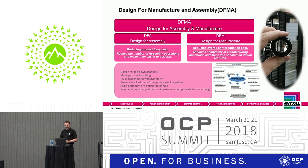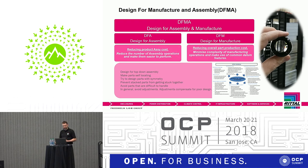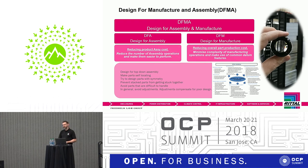Breaking down DFMA: DFA — design for assembly — is basically reducing product assembly cost by reducing the number of assembly operations and making them easier to perform. DFM — design for manufacture — is reducing the overall part production cost by minimizing the complexity of manufacturing operations and making use of common features and common datums between parts. We use a checklist that engineers go through each time to make sure all DFMA principles have been considered.